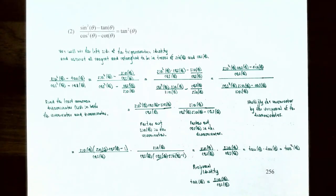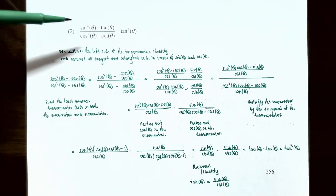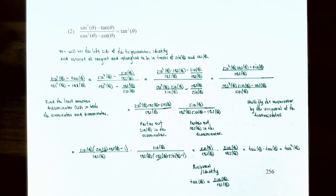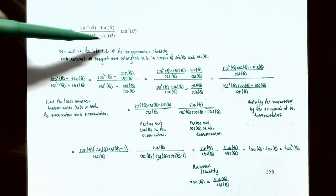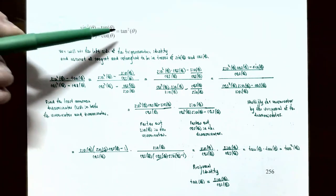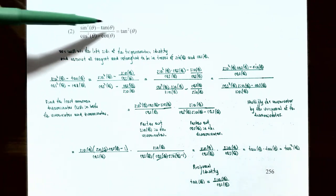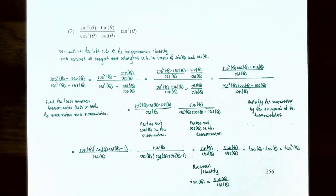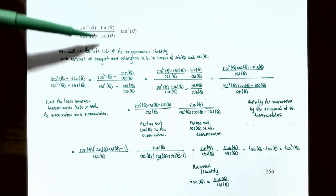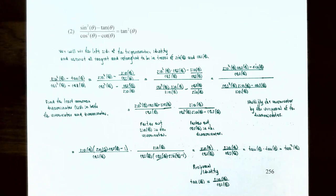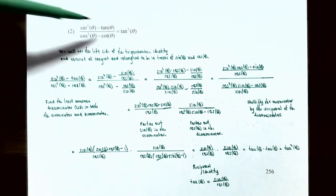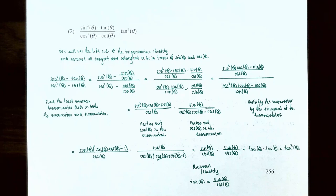For number 2, we establish the identity: (sin²θ − tan θ) / (cos²θ − cot θ) = tan²θ. Notice that on the left side there is the most algebra and trigonometric identities to apply, because we can change tan θ to sin θ / cos θ and rewrite cot θ as cos θ / sin θ. In other words, we can get the left side entirely in terms of sin θ and cos θ.